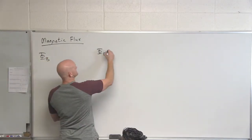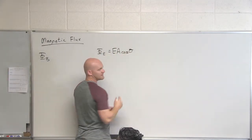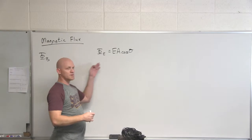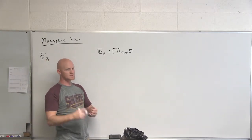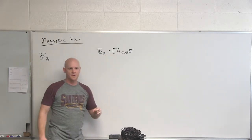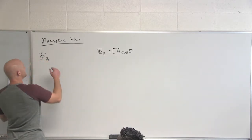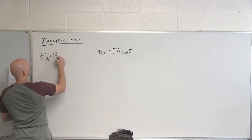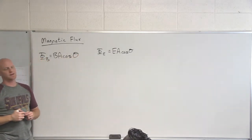Anybody remember? Dealt with electric field lines going through either a plane or through an enclosed surface in terms of Gauss's law. It was E A cosine theta. It also equaled Q over epsilon naught. The magnetic flux is analogous to this and we define it exactly the same way. So it's B A cosine theta.